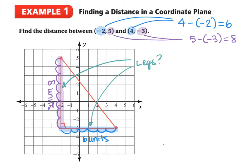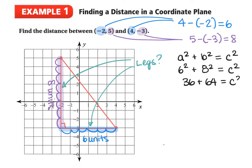From here, we can write our formula for Pythagoras: a squared plus b squared is equal to c squared. Substituting the values we have: 6 squared plus 8 squared is equal to c squared, so 36 plus 64 is equal to c squared, giving us 100 equals c squared. Taking the square root of both sides, c is equal to 10 units. Because we're talking about a coordinate plane, we would be talking about units away from each other.